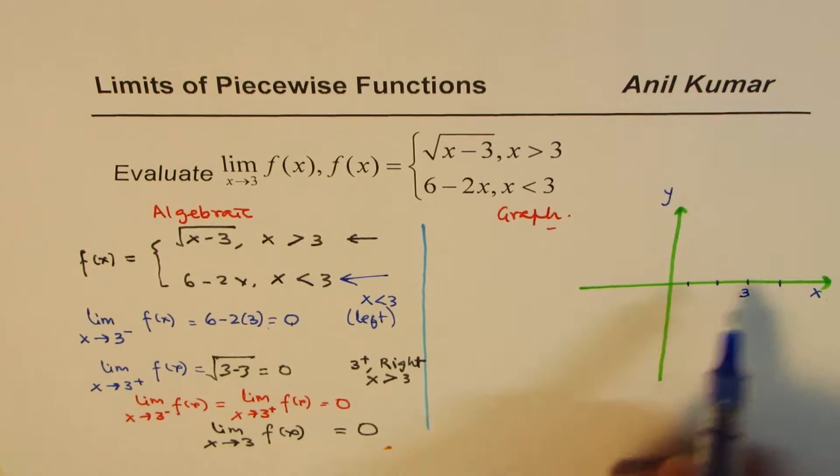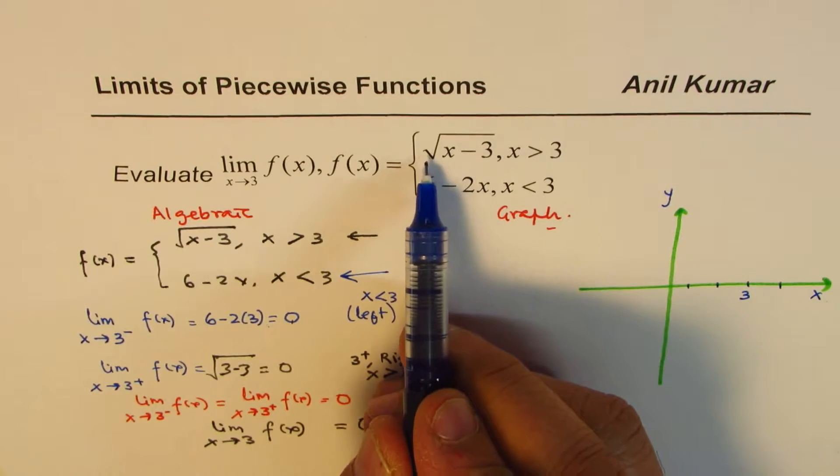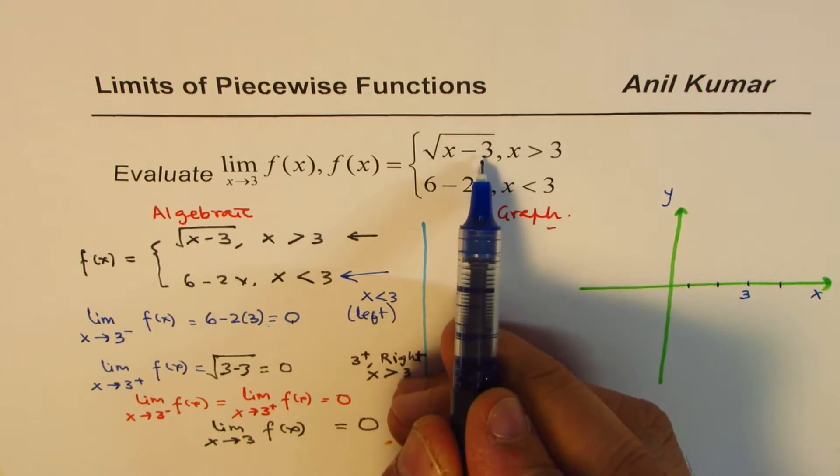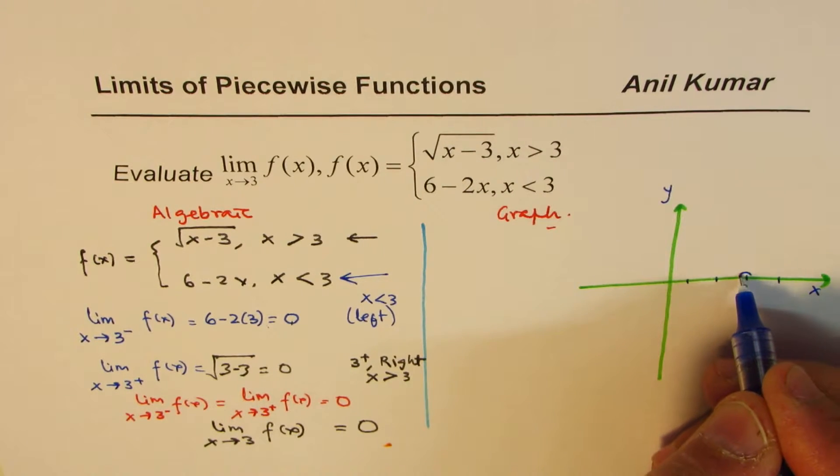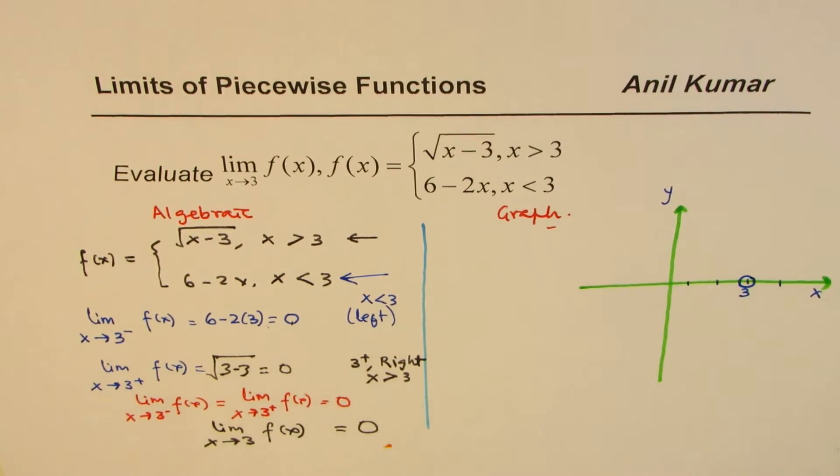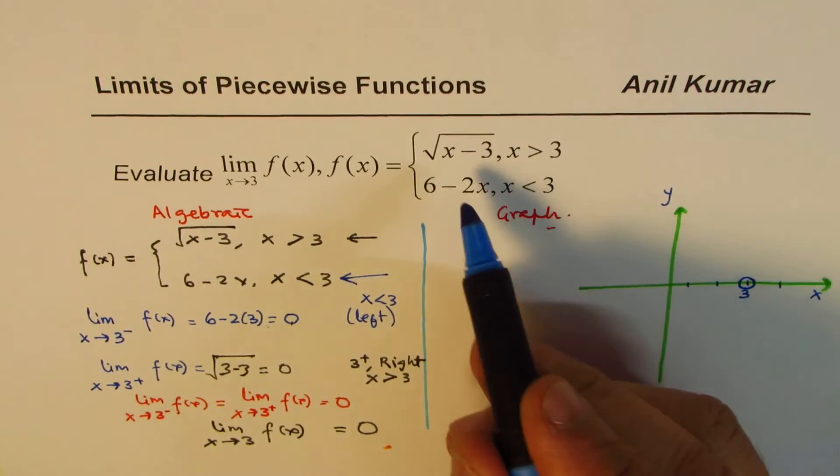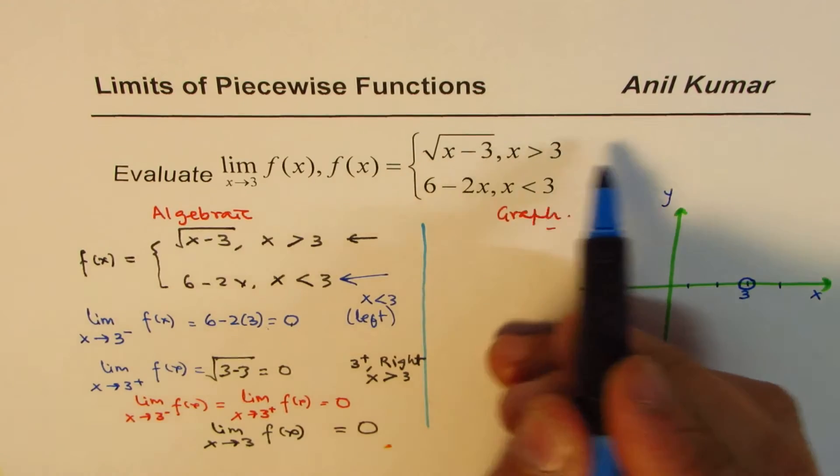Now let's see. The first one is square root function x minus 3 when x is greater than 3. That means this value is not included. Let me put a hole here. So once I put a hole, then I sketch my function, which is square root function, right side of this.